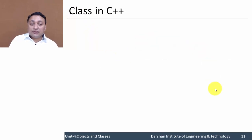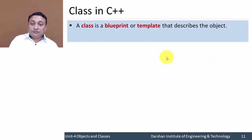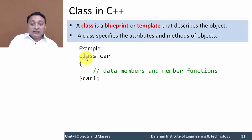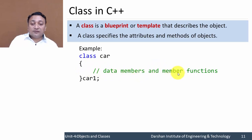As we have discussed, a class is a blueprint or template that describes the object and specifies attributes and methods. The syntax will be: the keyword 'class', then your class name, and in curly braces you define or declare data members and member functions — that means attributes and methods.